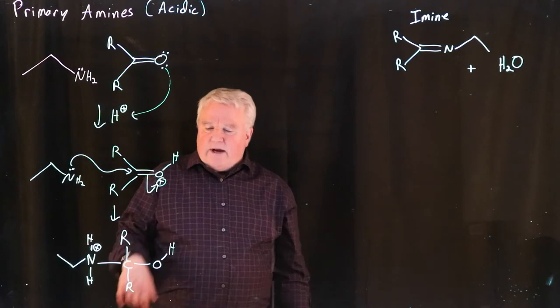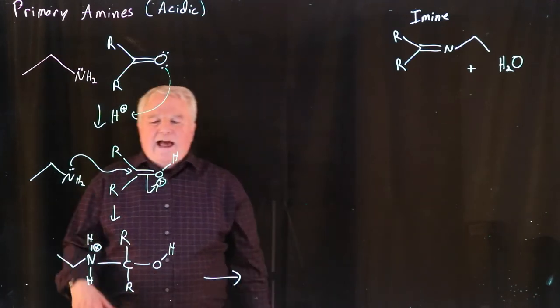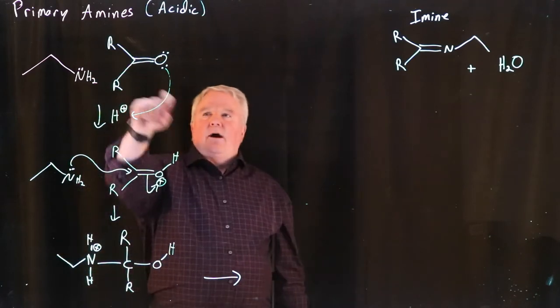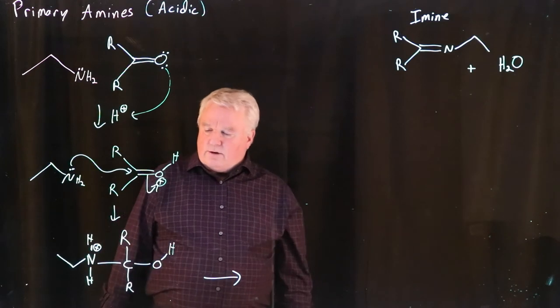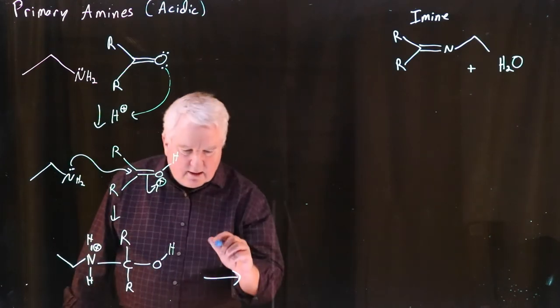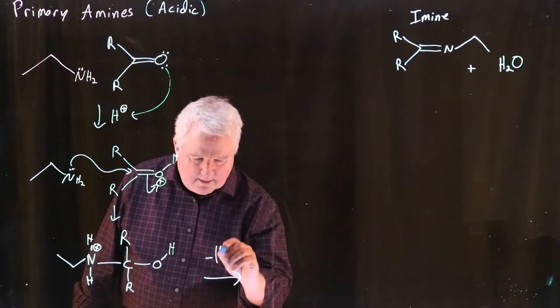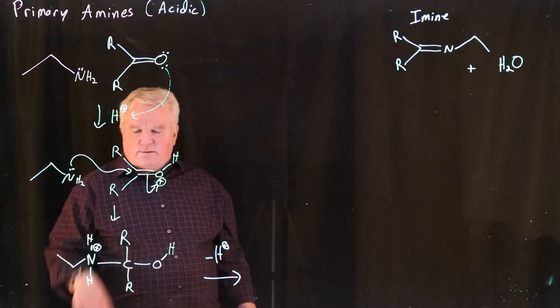The next step in the reaction, something can pull around, float along, and pull off that proton. It might be another carbonyl species. It might be another amine. But something will pull off that proton. And so, all I'm going to do is indicate that we're losing a proton in this step. And I'm going to pull off this proton.